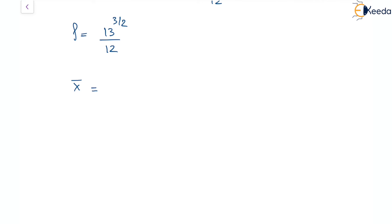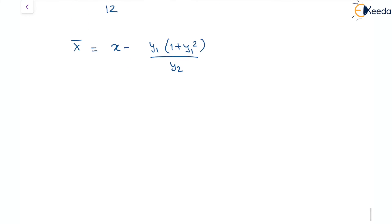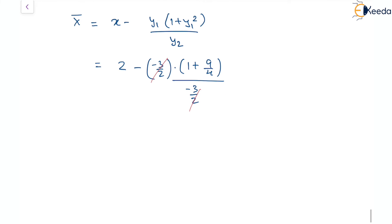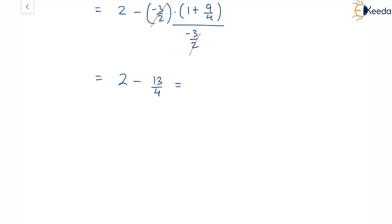Now for the x-coordinate of the center of curvature, given by x minus y1·(1 + y1²)/y2. This becomes 2 minus (minus 3/2)·(1 + 9/4)/(minus 3/2). The minus 3/2 terms cancel, and we get 2 minus 13/4, which equals minus 5/4. So the x-coordinate of the center is minus 5/4.